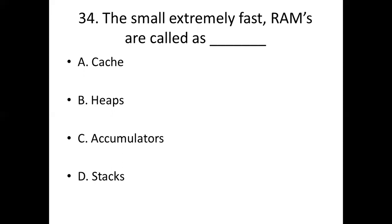Thirty-fourth bit: The small, extremely fast RAMs are called as dash. Option A: Cache. Option B: Heaps. Option C: Accumulators. Option D: Stats. Answer: Option A, Cache.